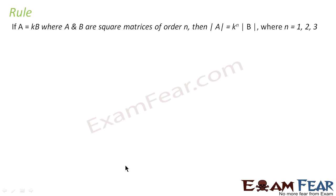Let's have a rule. The rule says if A is equal to kB, where A and B are square matrices of order n, then the determinant of matrix A is nothing but k to the power n into the determinant of matrix B.